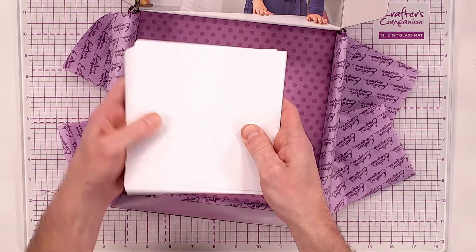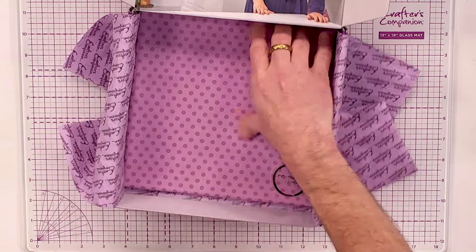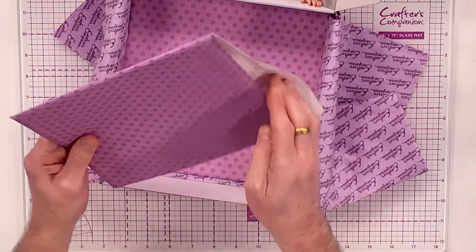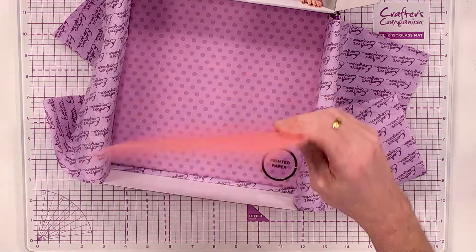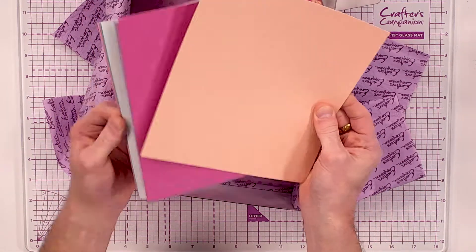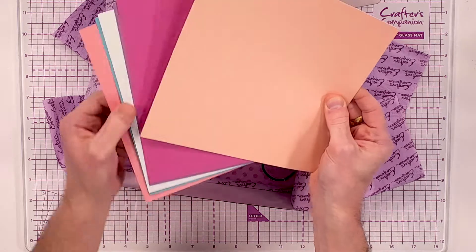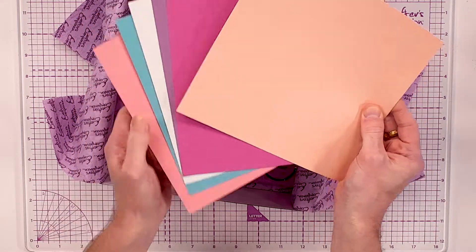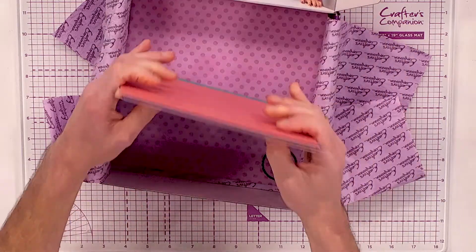Then what you've also got is colored card. Now you are going to get 18 sheets in total. You are getting six colors and you're getting three of each. I have just brought out one of each to show you, but you are getting 18.